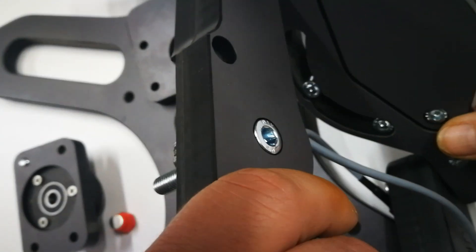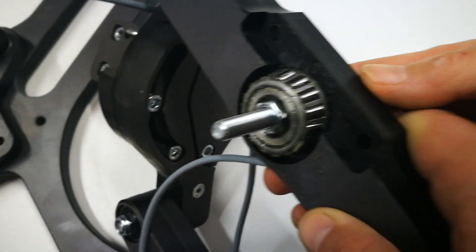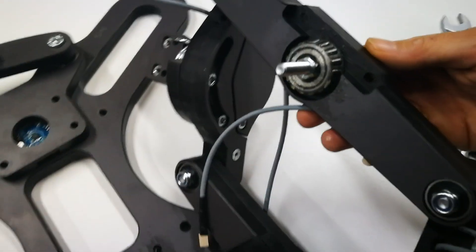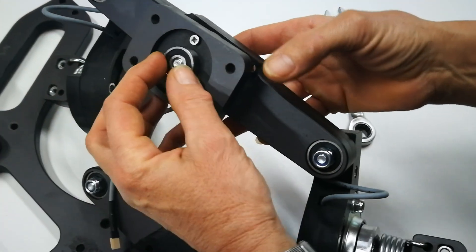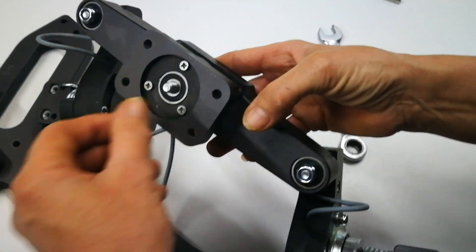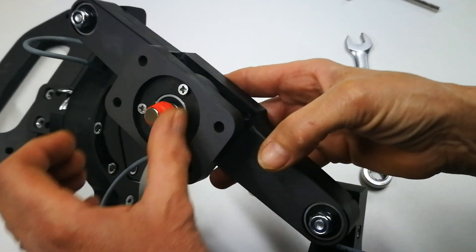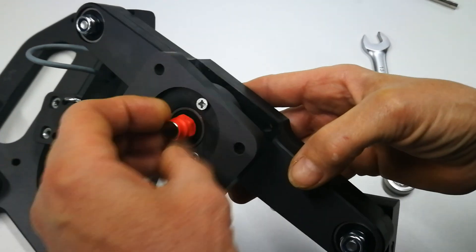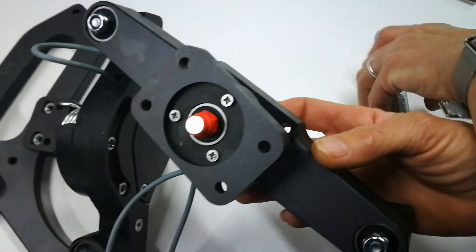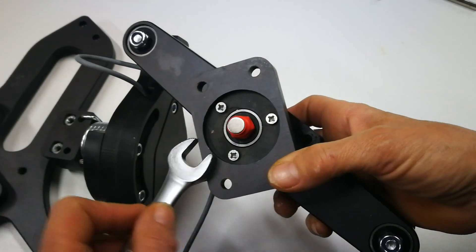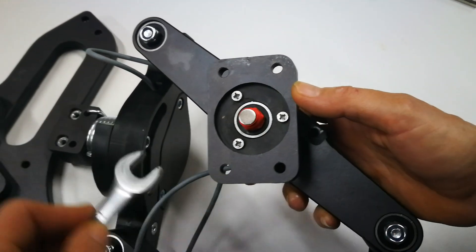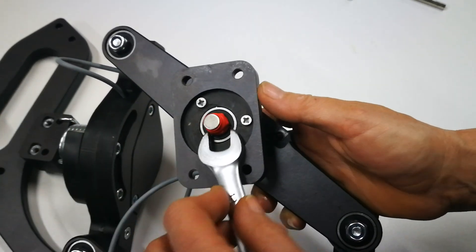This procedure is necessary because the nut which holds the magnet should never be overtightened because you will damage the bearing. So it needs to be just slightly tightened so it does not have play.